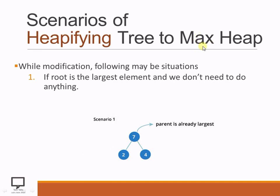Now converting the complete binary tree to Max Hip. The very first scenario: if the root itself has a greater or larger value than that of the children, then there is no need to do anything else, because this tree is already satisfying the property of Max Hip.